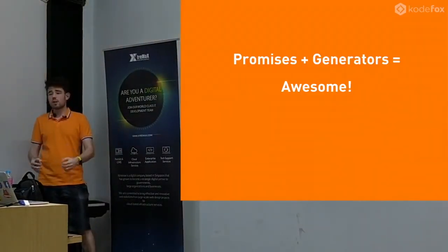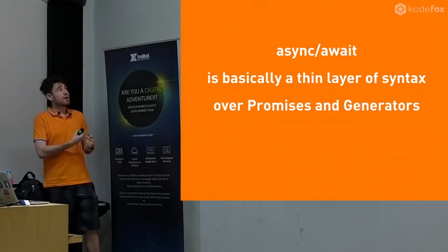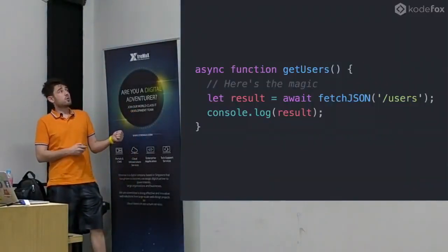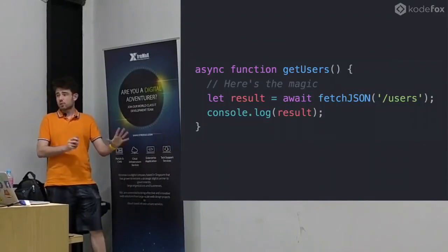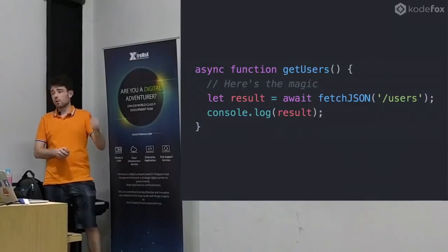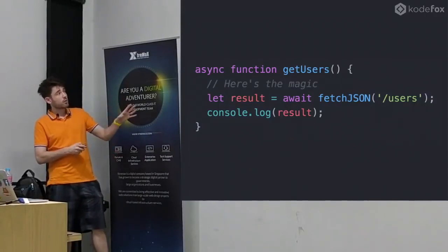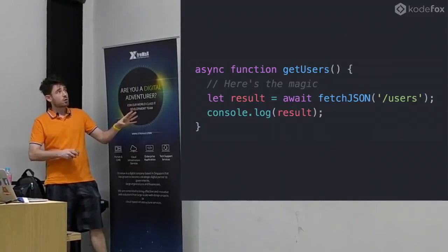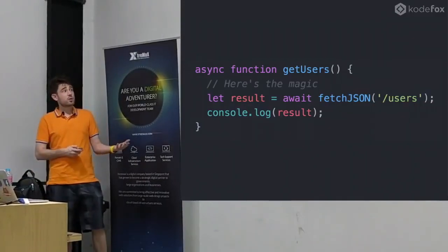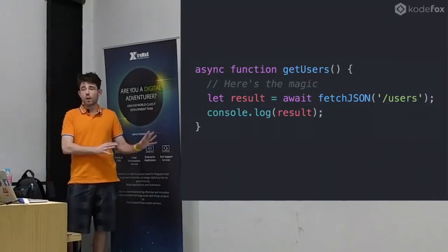So we take promises, we combine it with generators, and we get async/await. It's basically just a layer of syntax on top of generators and promises. Instead of a function star, we have this async function. We use the word await and we put a promise after that - it always has to be that way. The await will pause the function in the middle of executing that line. We just pause the whole function and wait. But we let the event loop do other stuff. Eventually, when the fetch has completed, the function gets resumed and we have our result.